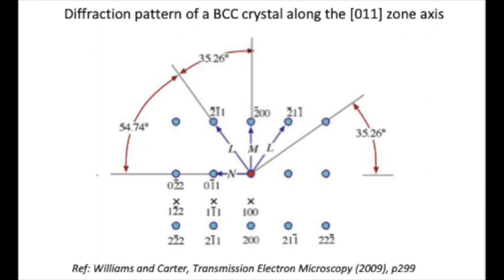This example here shows the diffraction pattern of a BCC crystal along the 011 zone axis. The blue spots are the visible diffraction patterns, and the crosses are the forbidden reflections.